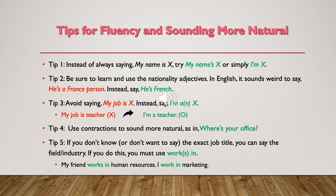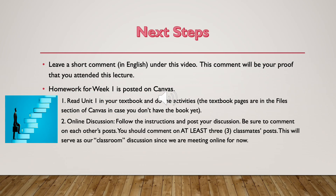That's all of the main content — we talked about vocabulary, grammar, and some tips for unit one. Now let's talk about what you need to do next for your assignment and homework. The first thing you need to do is under this video on YouTube, leave a short comment in English — you can say anything you want, but try to keep it positive. This comment will be proof that you attended this lecture. If you don't leave a comment, we have no way to know that you actually watched the lecture.